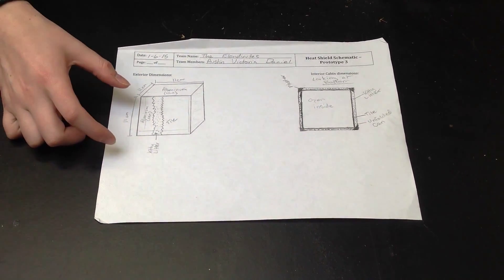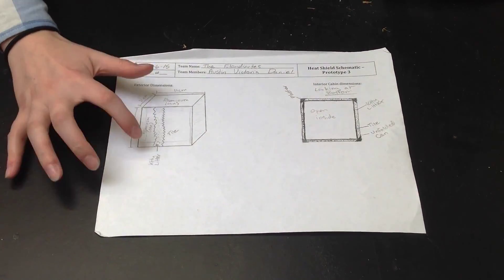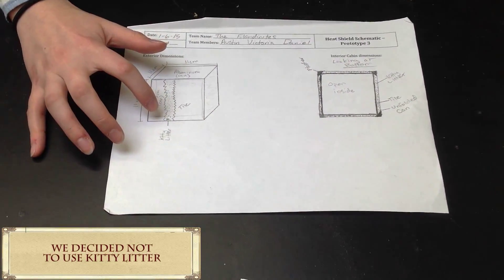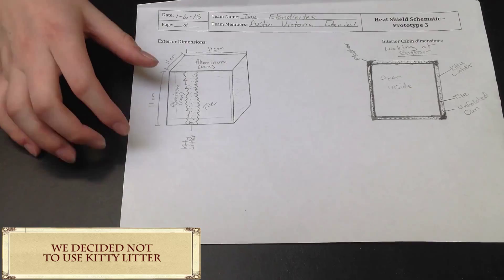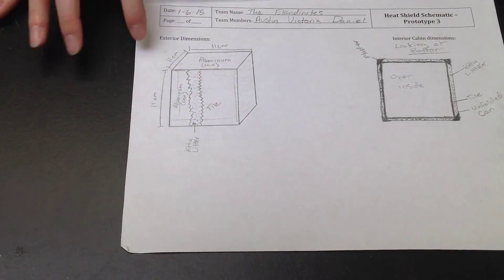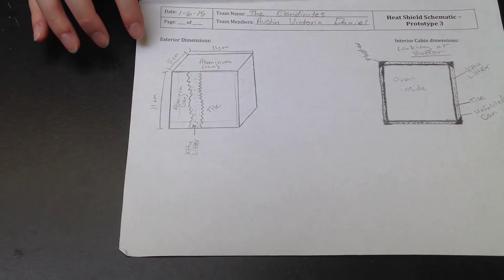Outside of this we have a layer of kitty litter as an insulator, and then outside of this a collection of aluminum cans to support and provide heat resistance.